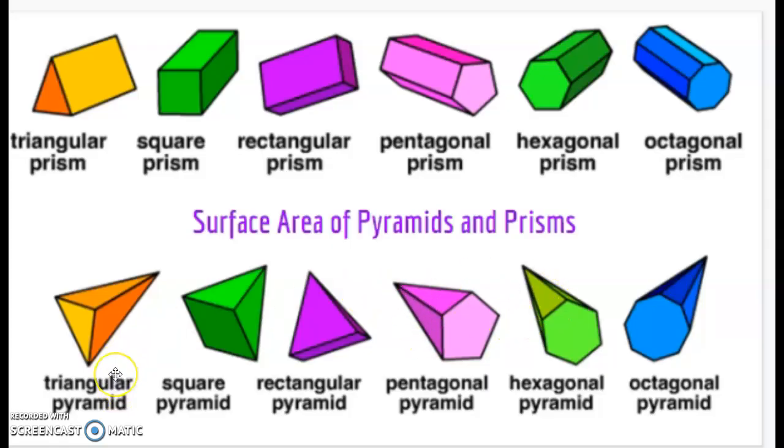So again, the base names the shape. So in this case, we have all triangles, so it is a triangular pyramid. The next example, we have a square pyramid because we have a square as the base and then pyramids meeting at the top.